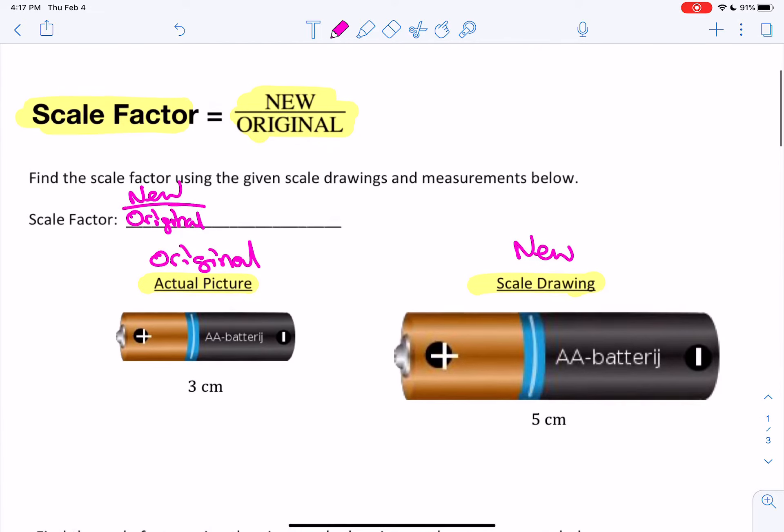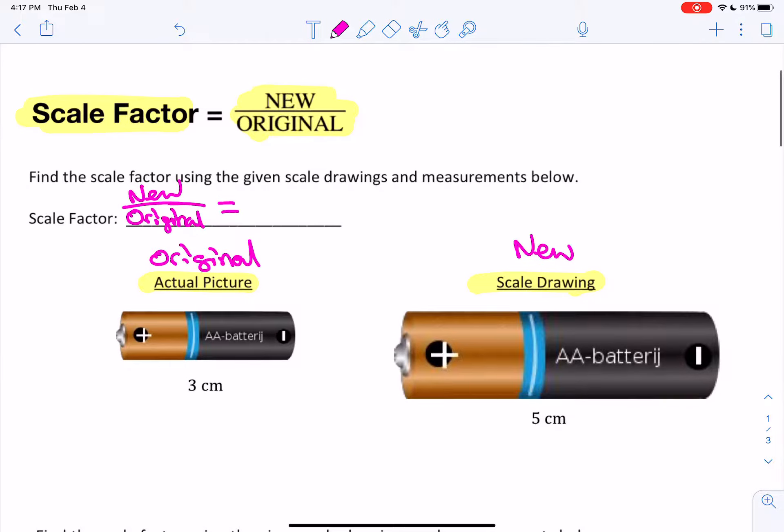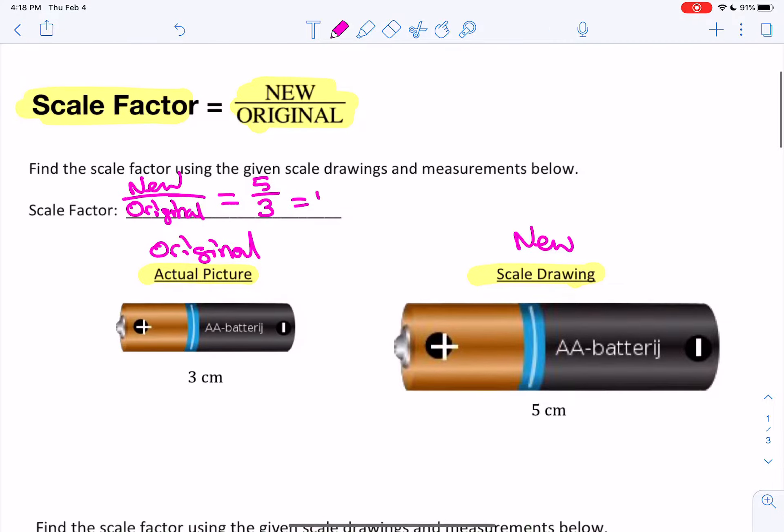Okay, so the new length of the battery is 5. The old length of the battery, or the original, was 3. And we get 5 over 3, which is 1 and 2 thirds. Or you could have divided it using a calculator and you would have gotten 1.6. And this is a repeating decimal, so we put the line over the 6.